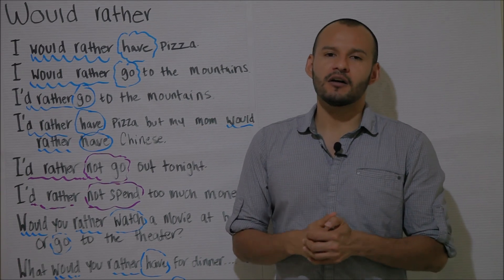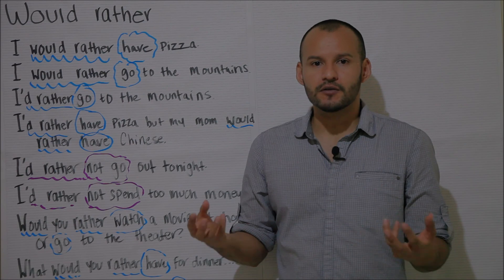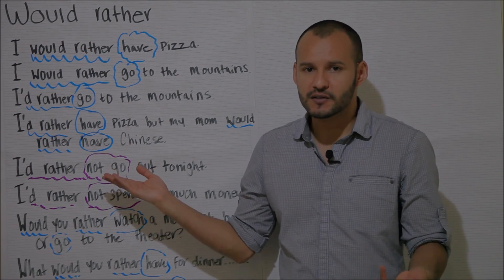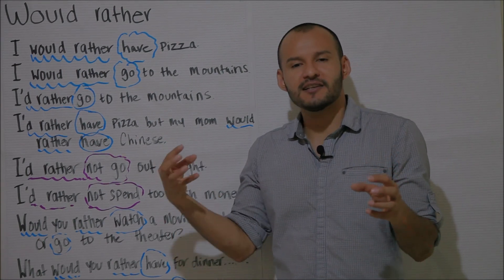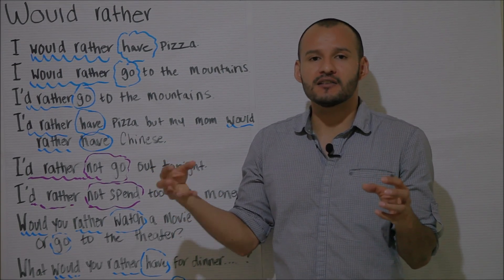Now in conversational English it is very common to use contractions and this is no exception. The auxiliary would does have a contraction with pronouns and it's apostrophe d.